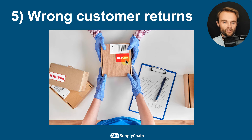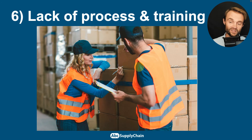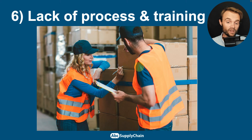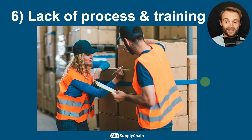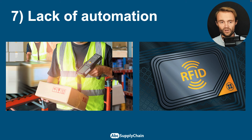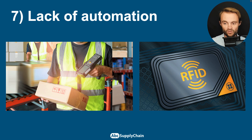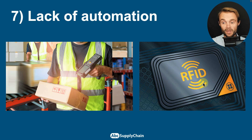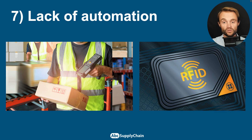Number six is lack of process and training. If you are not clear with your physical process and your IT process, you increase the probability of inaccurate inventory. Number seven is lack of automation in your inventory control. If you only use paper to check your inventory, you will have poor accuracy. But if you use the right system — for example, scanners — or maybe you already use the technology called RFID, radio frequency identification, this kind of technology will give you a lot of support to improve your inventory accuracy.